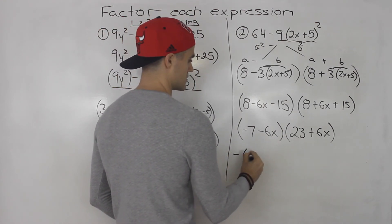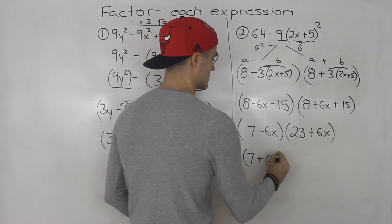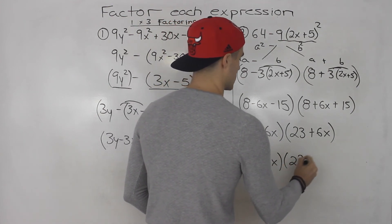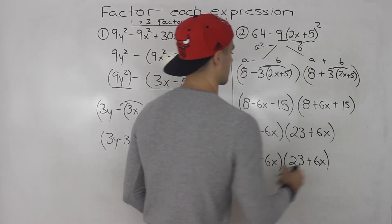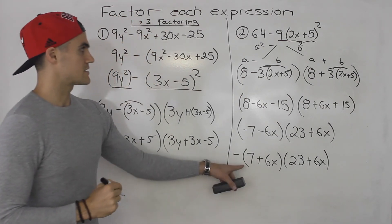And then if you want to make this look a little nicer, take out a negative. So it'd be 7 plus 6x, 23 plus 6x. All right, so that's the final answer.